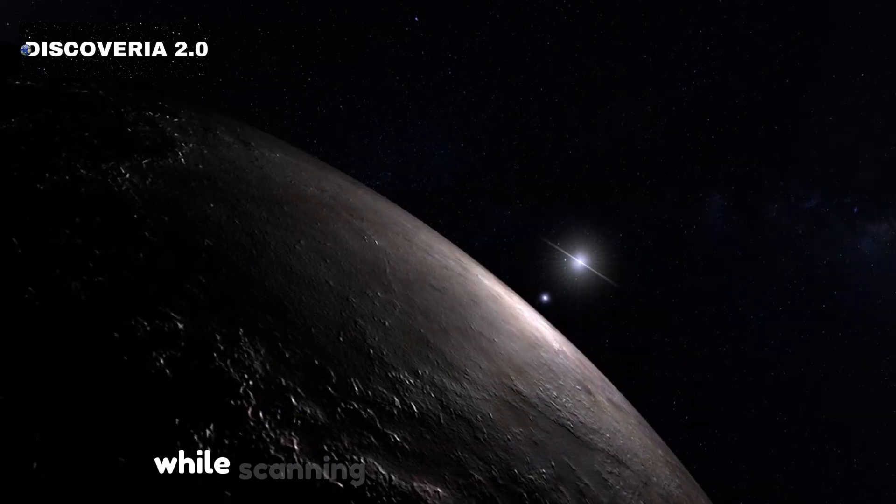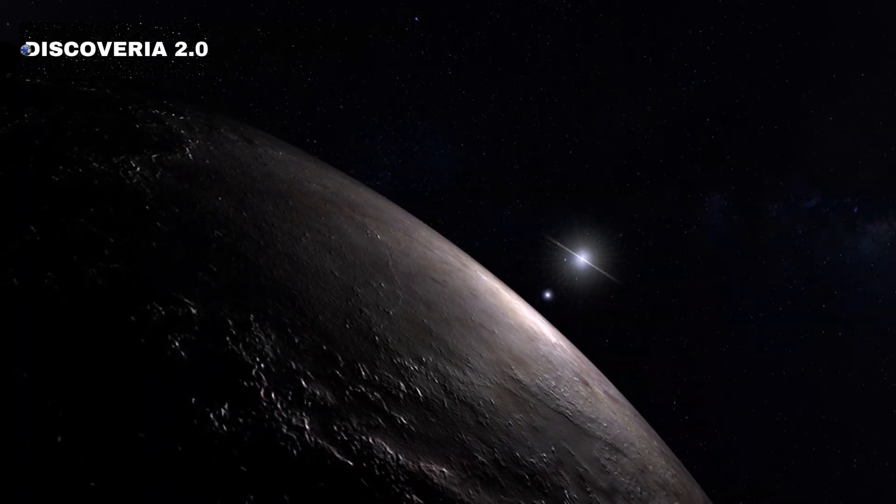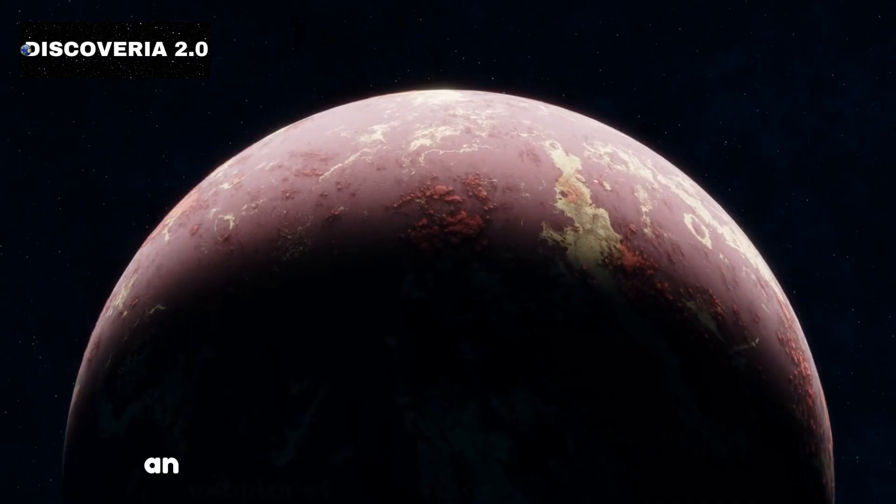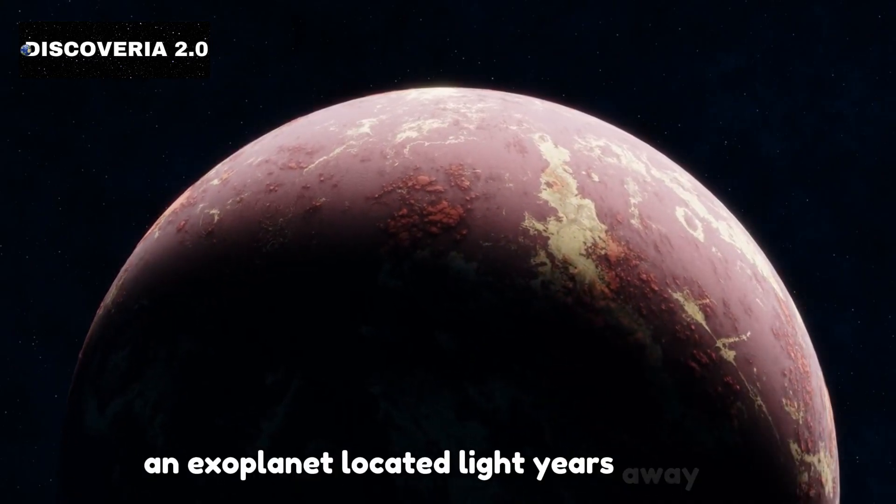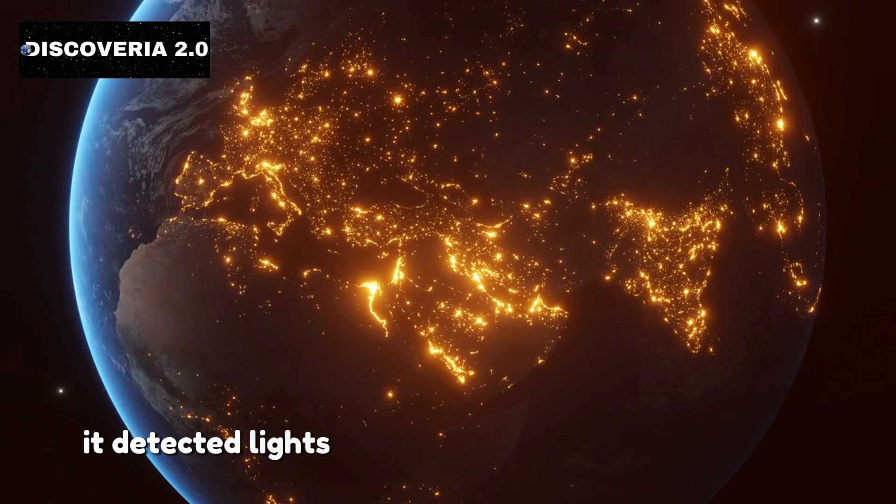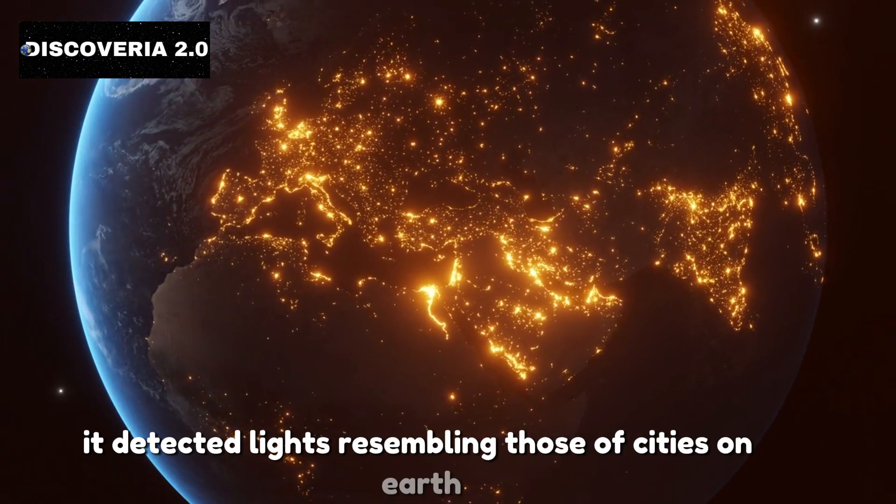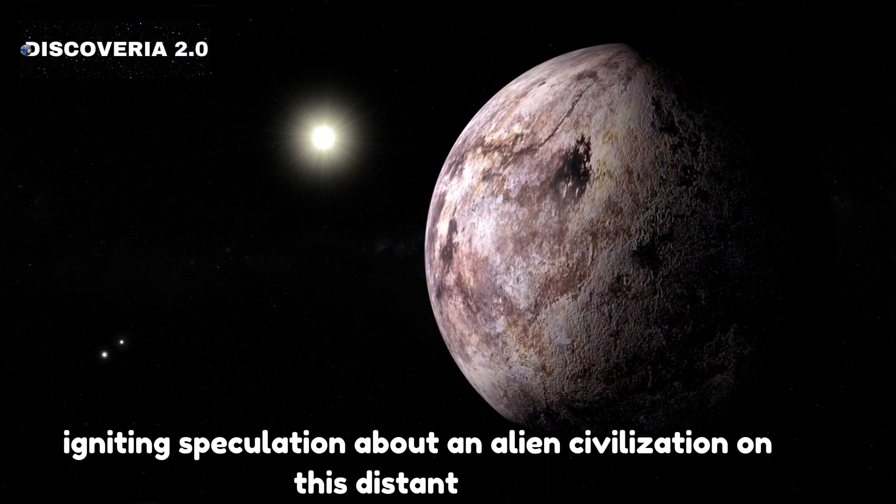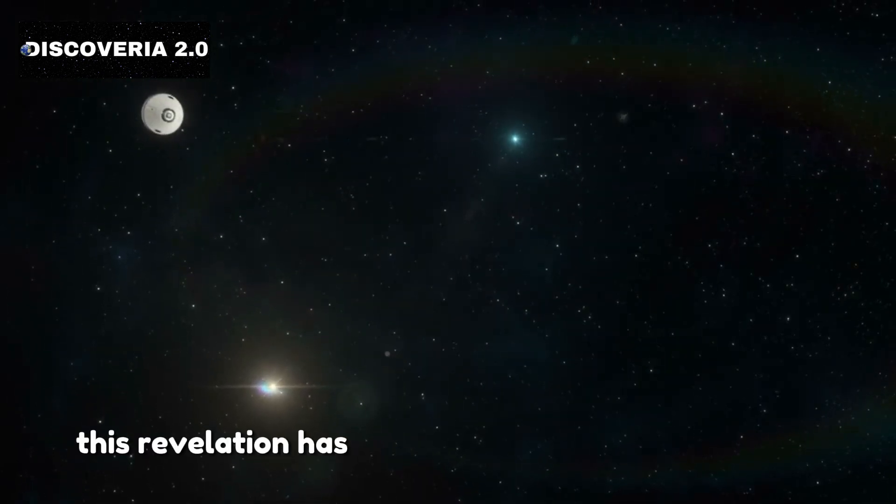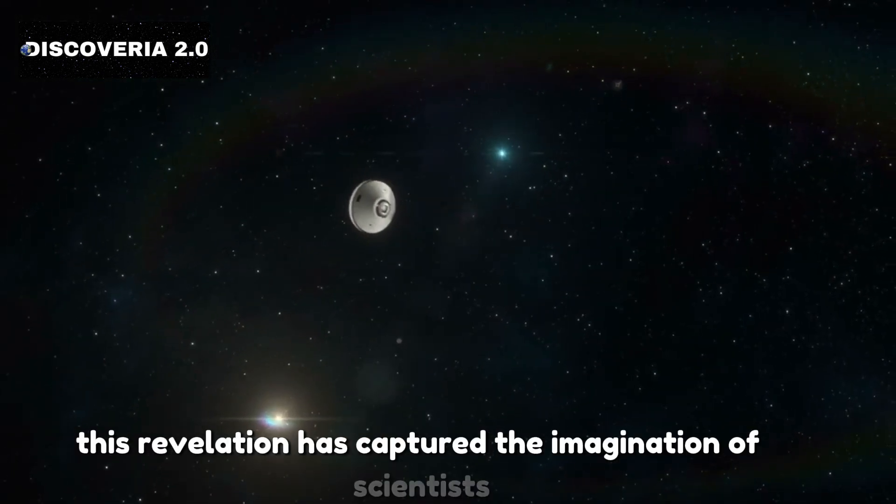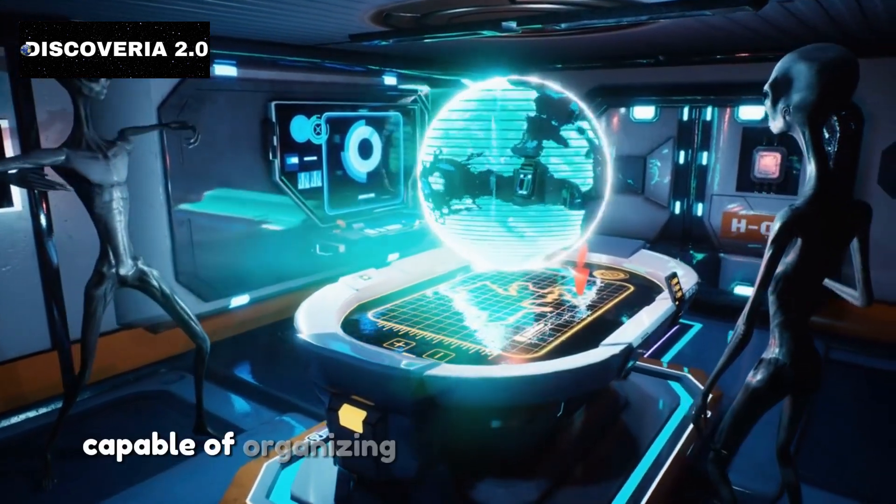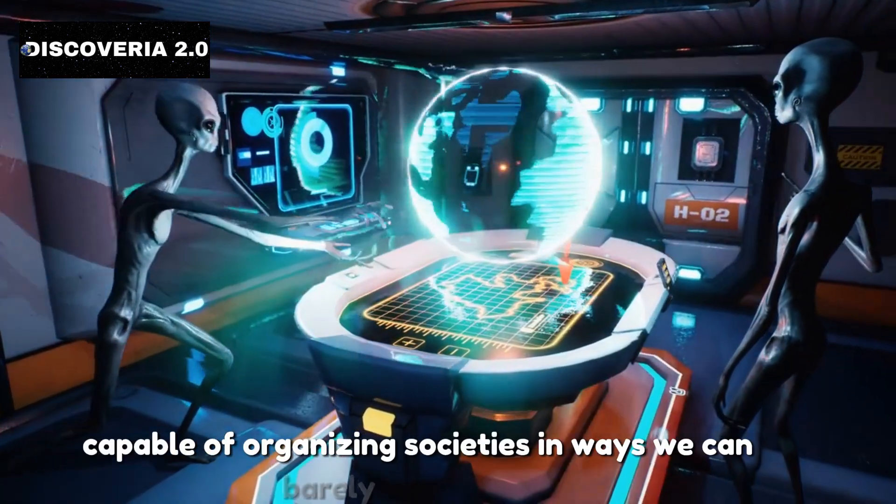While scanning the vastness of space, the telescope spotted something extraordinary on Proxima Centauri b, an exoplanet located light years away. It detected lights resembling those of cities on Earth, igniting speculation about an alien civilization on this distant world. This revelation has captured the imagination of scientists, as it hints at the existence of intelligent beings capable of organizing societies in ways we can barely comprehend.